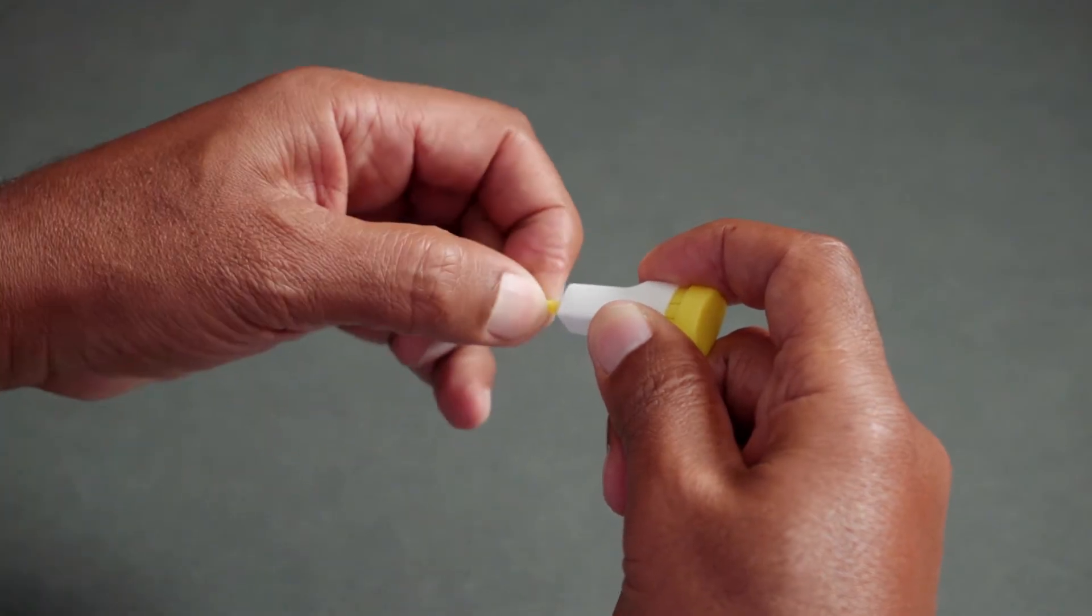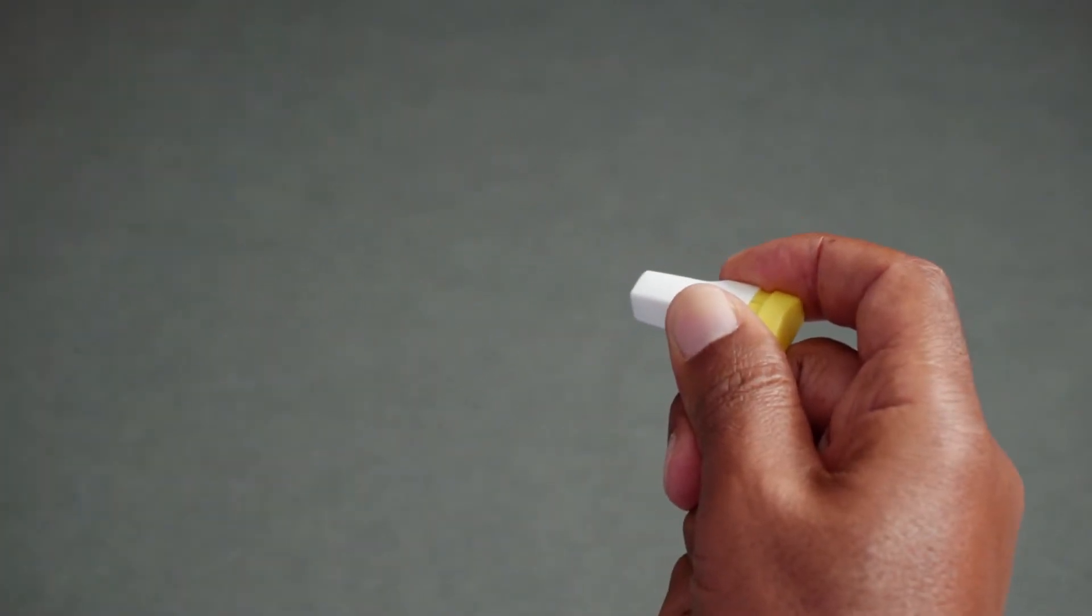Take the lancet and twist the colored tip. Pull off the tip of the safety lancet.